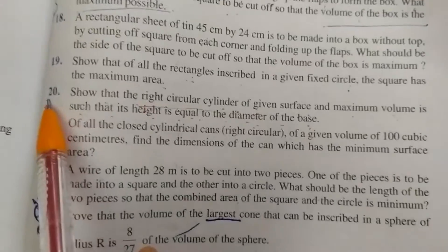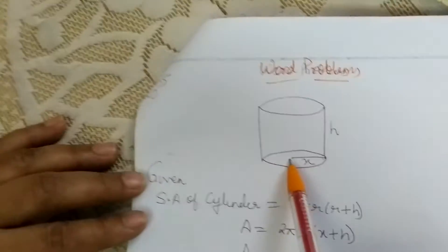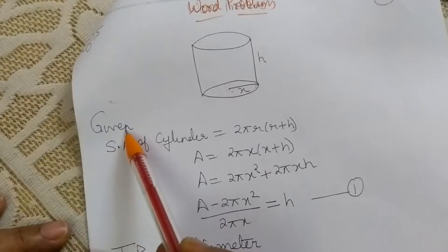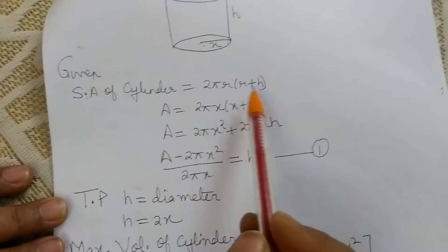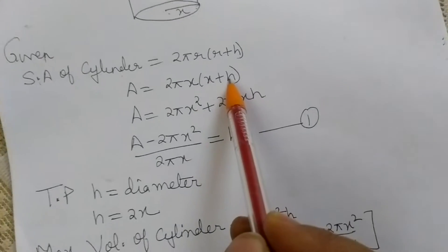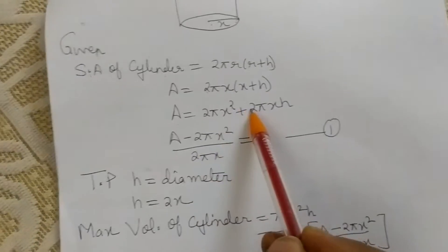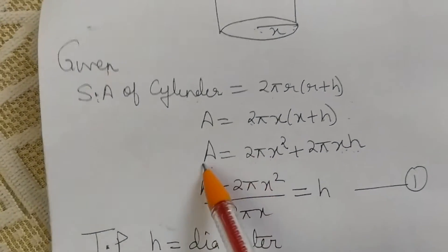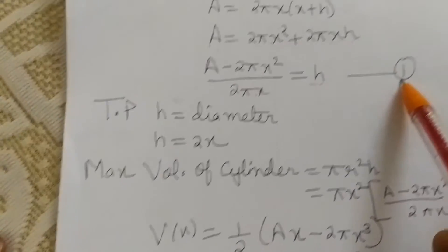We will start question 20 with the solution. There is a cylinder — I have taken radius as x and height as h. Surface area of cylinder is 2πr(r + h), so writing x in place of r: area = 2πx² + 2πxh. Rearranging: h = (A − 2πx²) / (2πx). Save this as equation 1.